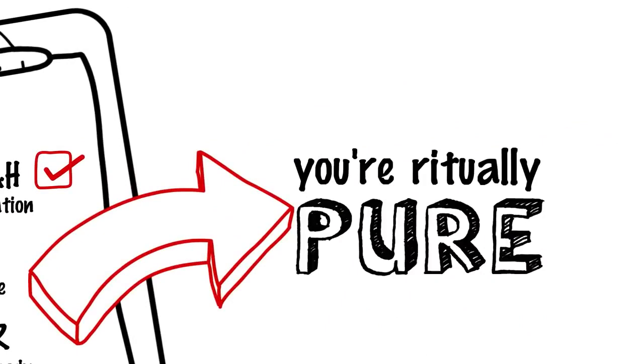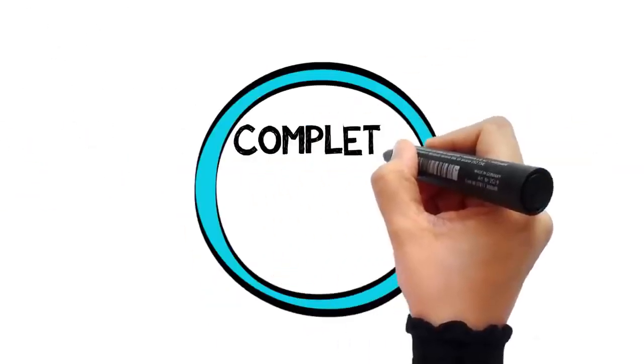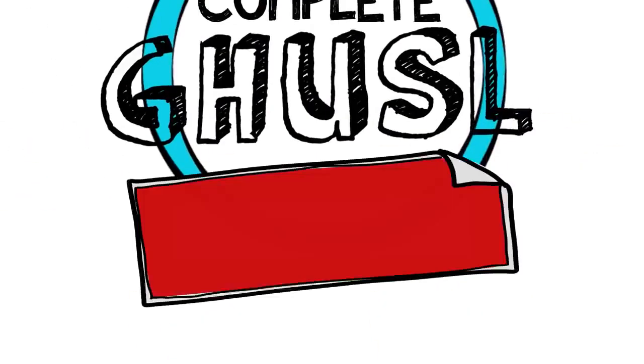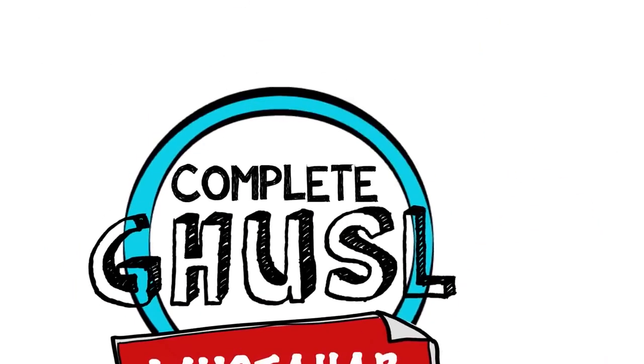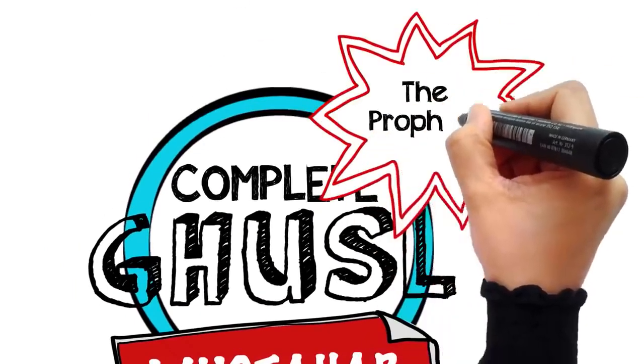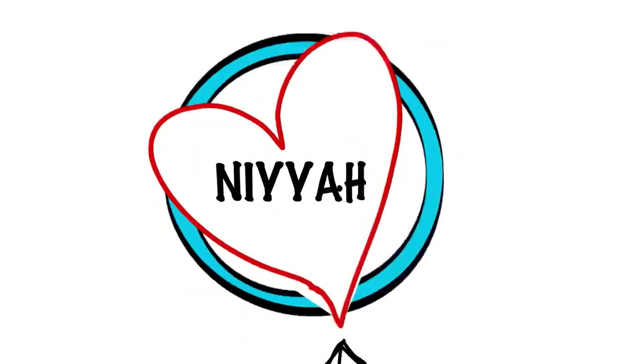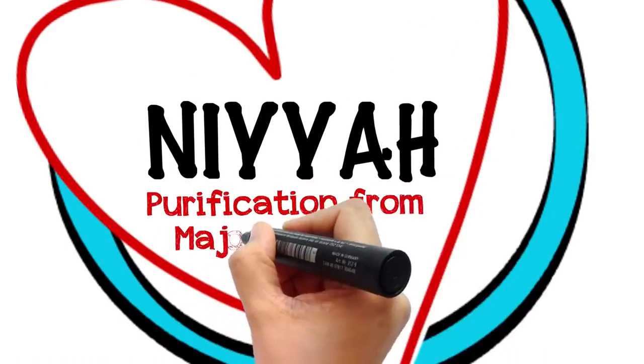As for the complete ghusl, and this is the mustahab one, and it is how the Prophet sallallahu alayhi wasallam took a bath, and this is how you do it: begin with an intention to purify yourself from the major impurity.